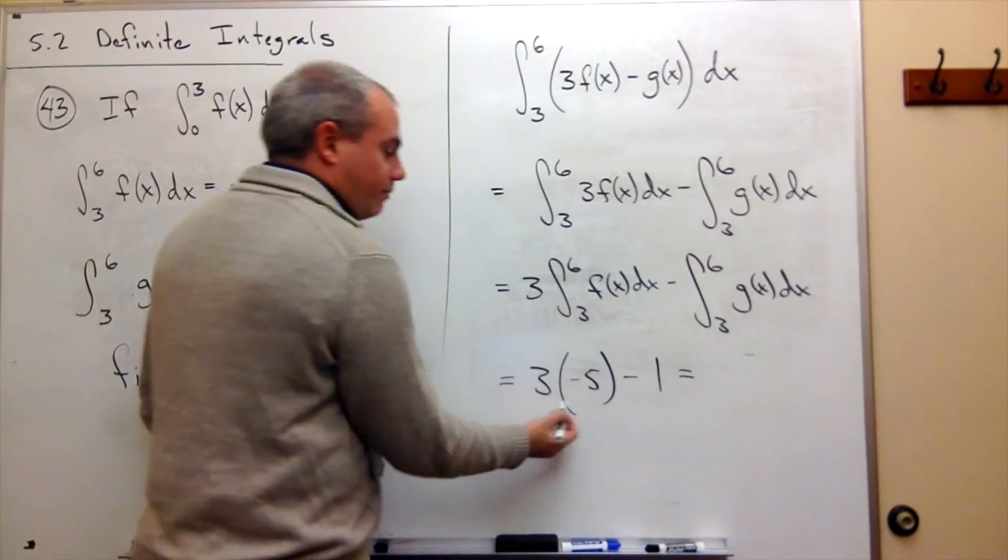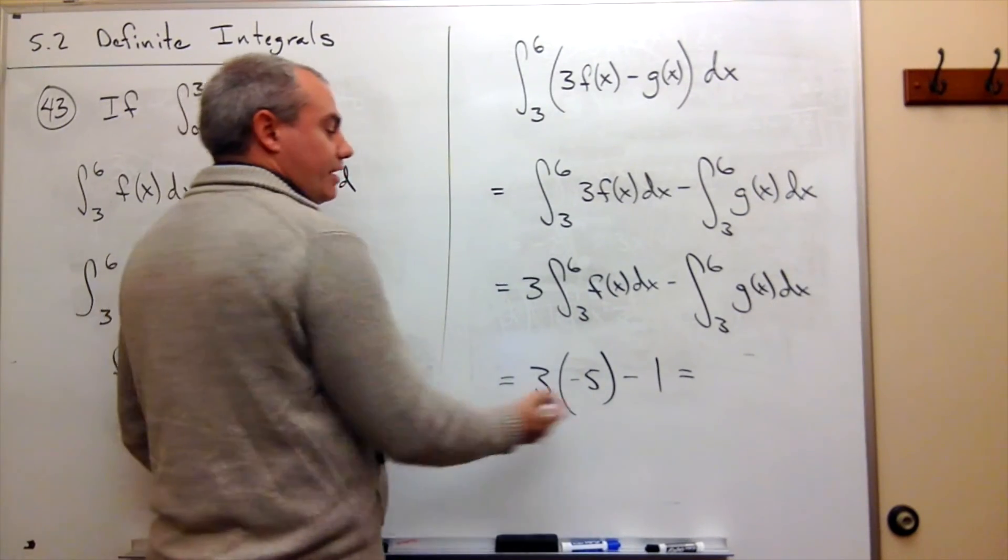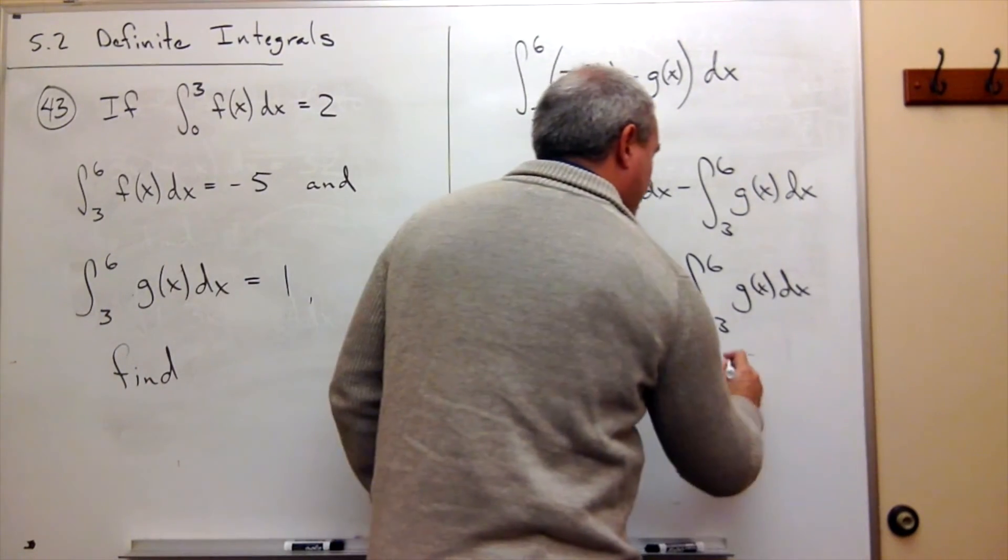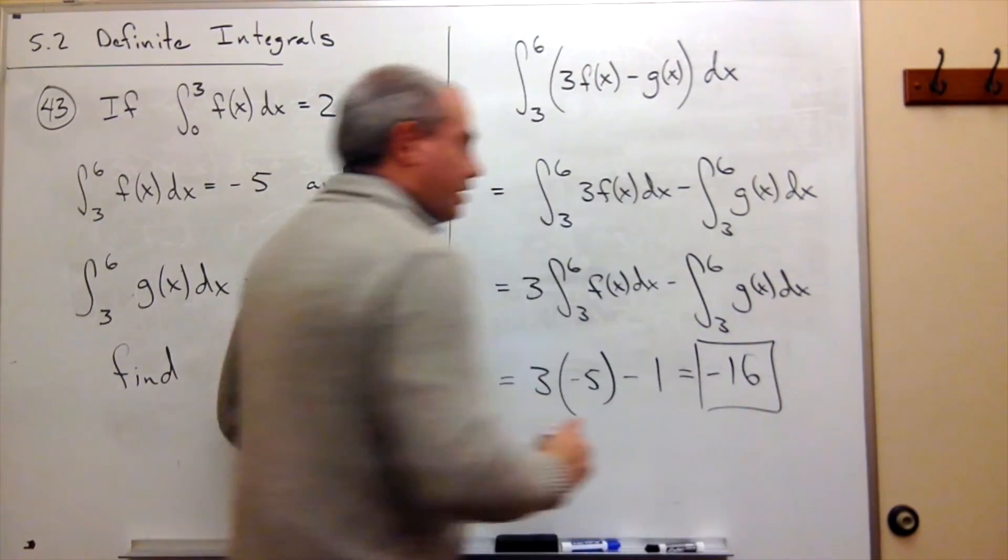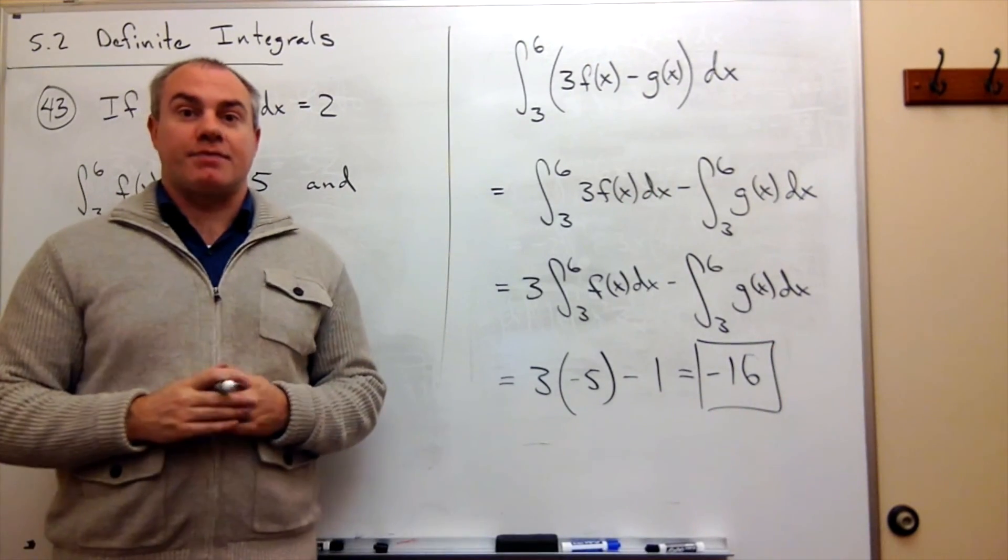So I get 3 times minus 5, which is minus 15, minus 1, is minus 16. And so negative 16 is my answer.